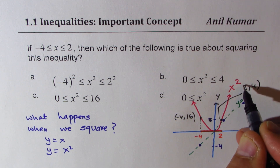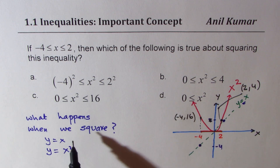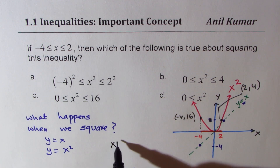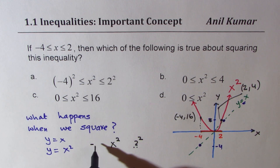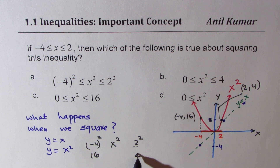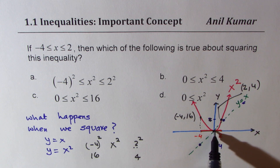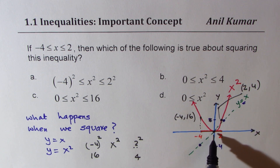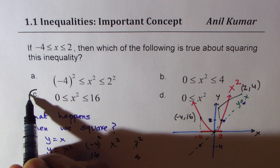So these two boundary values transform when we square: we had 2 so it becomes 2 squared, which is 4; we had minus 4, it becomes minus 4 squared, which is 16. The values change to 16 and 4. However, in between, you see it is a parabola which still has a minimum value of 0 at the vertex. Do you see that? This results in a very different outcome.